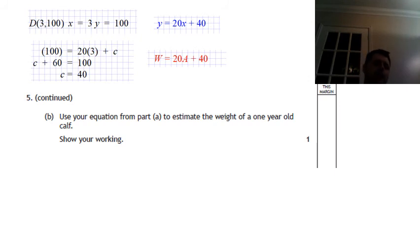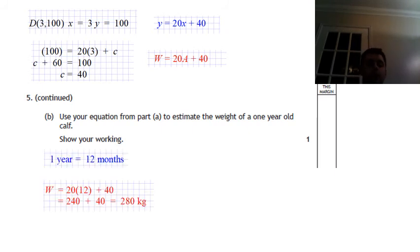Remember the age is in months. So one year, remember, is the same as 12 months. So you should fire 12 into the equation. 20 times 12 plus 40. You end up with 280 kilograms for the weight of a one year old calf.